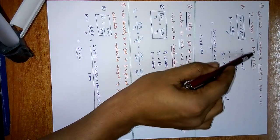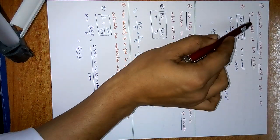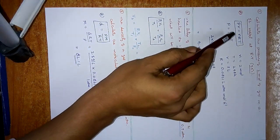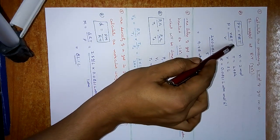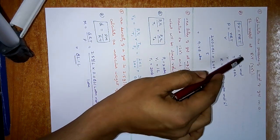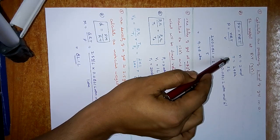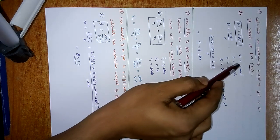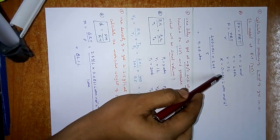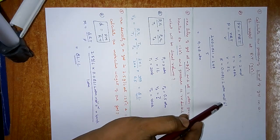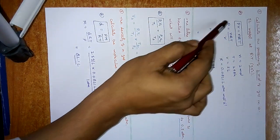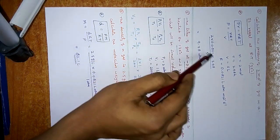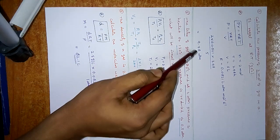Next problem: calculate the pressure of 2 moles of gas in a 5 litre vessel at room temperature. Using the ideal gas equation PV = NRT. Here N = 2 moles, T = 298 K, V = 5 litres, and R = 0.0821 L·atm·mol⁻¹·K⁻¹. We know every value except P. Substituting all values, we get P = 9.78 atm.